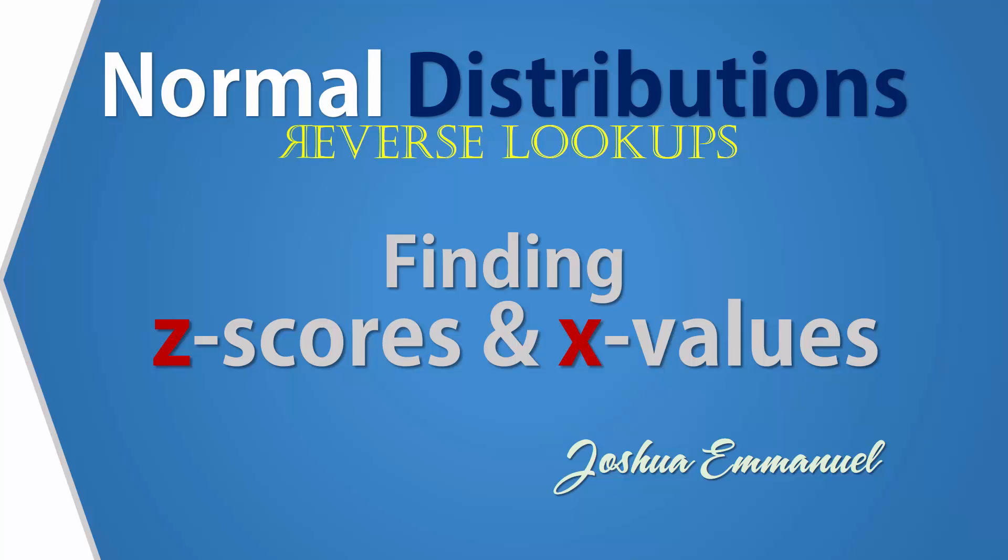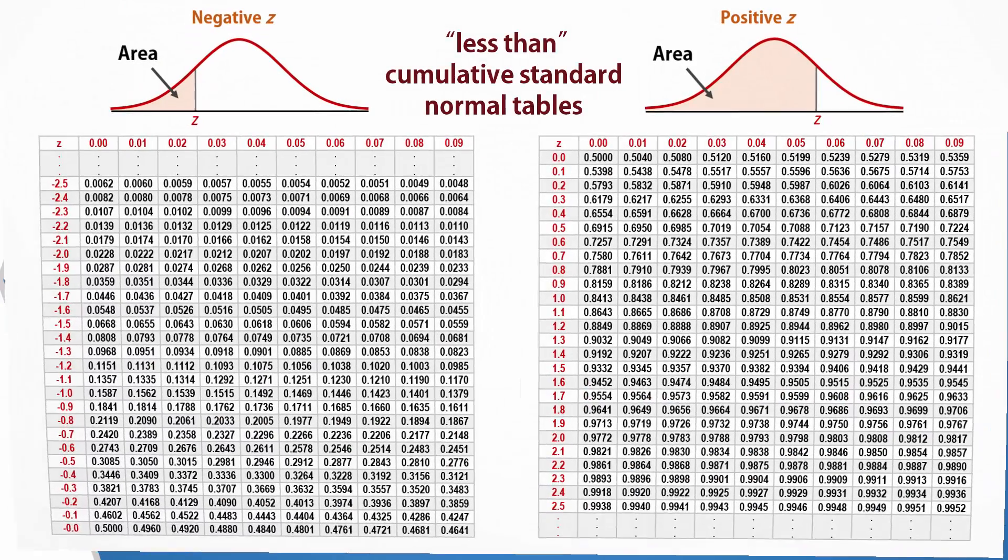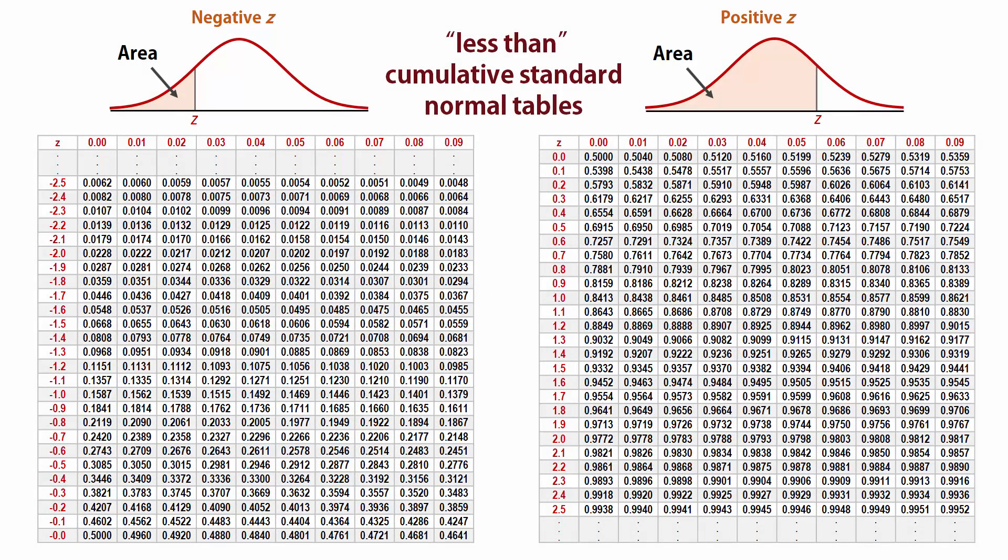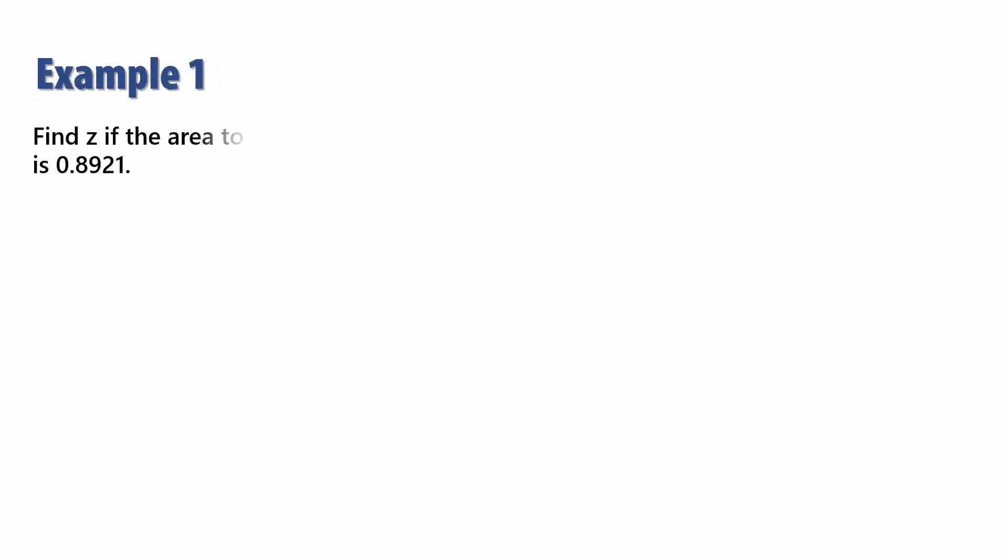Hello and welcome. In this video, I'll be showing how to use the less than cumulative normal distribution tables to recover X and Z scores given areas or probabilities. Let's look at some examples on finding Z scores.